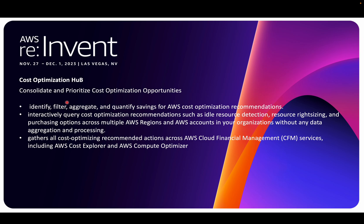In this video, since re:Invent has already happened, we have a great new feature from AWS in terms of how you can do optimization — an analysis of all your resources like EC2, whether right-sizing recommendations are there or not, Graviton migration from normal instances. All those recommendations and optimizations are handled by a tool called Cost Optimization Hub, which is part of the billing and management console.